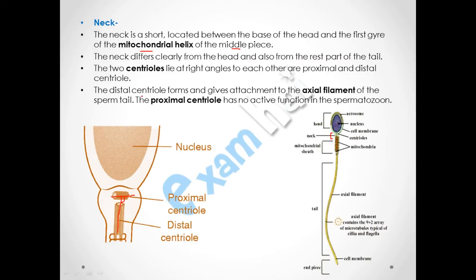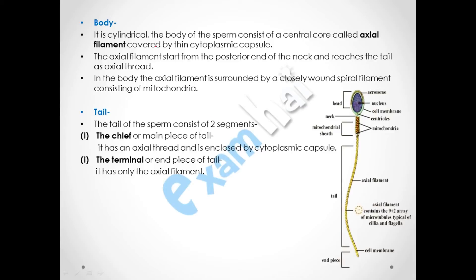The distal centriole gives attachment to the axial filament, which is necessary for the movement of the sperm. The proximal centriole has no active function in the spermatozoon; it is simply proximal to the nucleus, which is why it is called the proximal centriole.